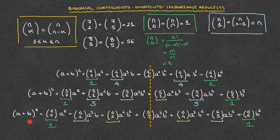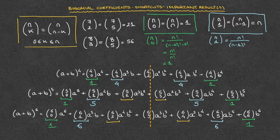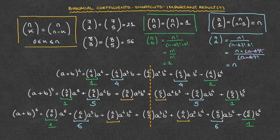For the third expansion, since the power is 6, we can state that 6 choose 1 equals 6, and 6 choose 5 equals 6. We can prove this: n choose 1 equals n! over (n−1)! times 1!. That equals n times (n−1)! over (n−1)!, since 1! is just 1. Cancelling the (n−1)! leaves us with n. So the second coefficient from either end always equals the power to which we're raising the binomial.